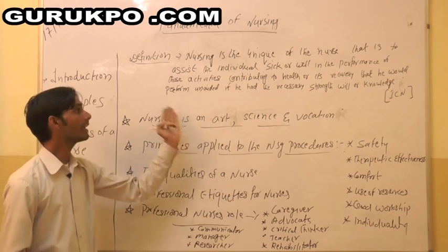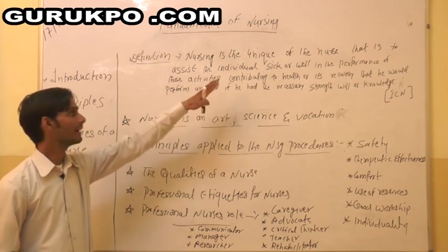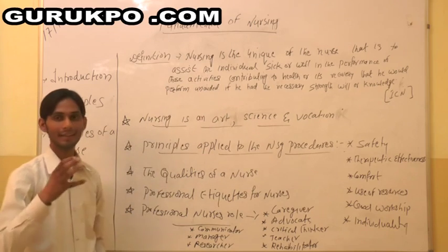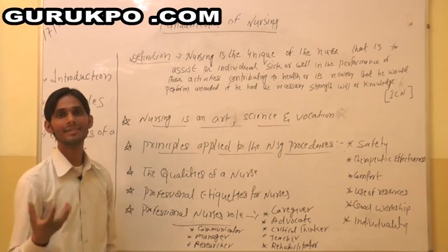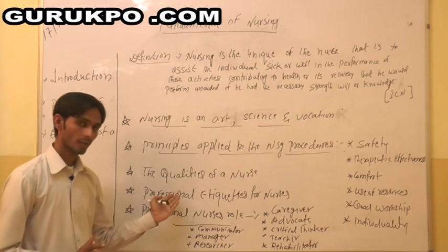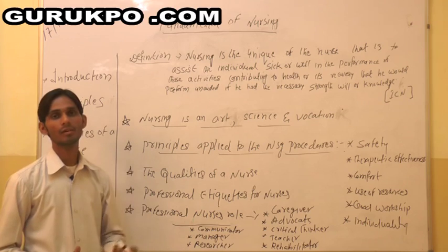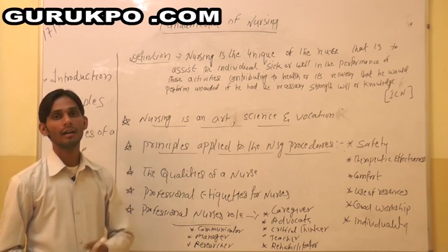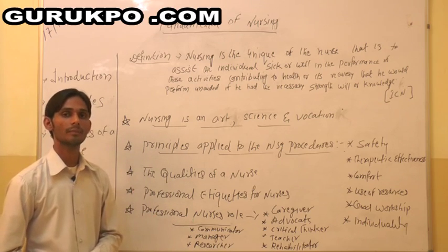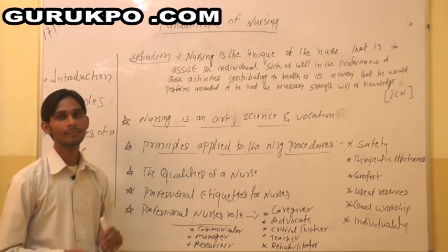So, till now we have discussed regarding nursing: the definition, nursing as an art, science, and vocation, the qualities of a nurse, the etiquettes of a professional nurse, and the role of the nurse in the professional nursing system. That was our topic for discussion.